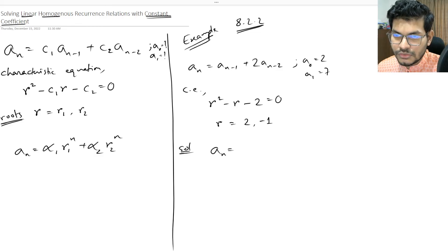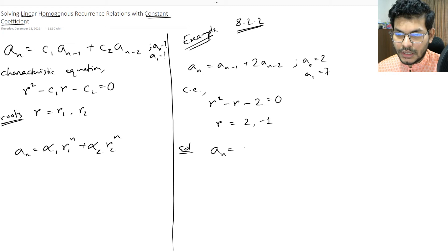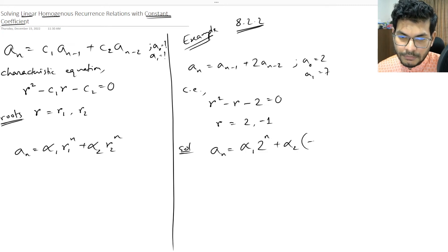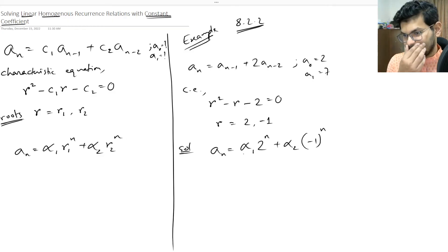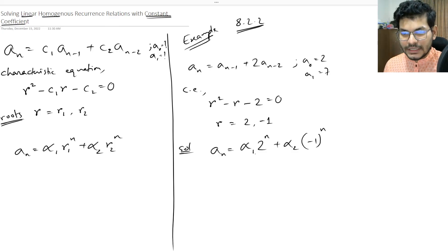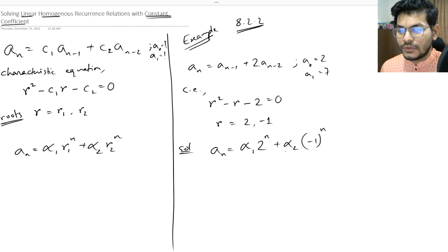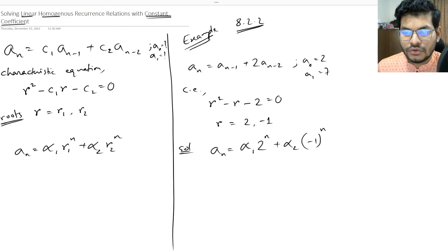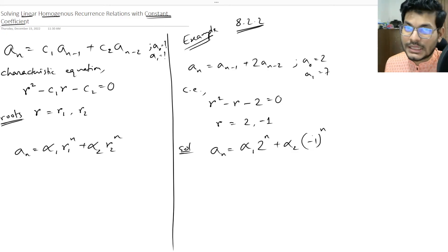Plugging in our roots r1=2 and r2=-1, the solution becomes: a(n) = α₁·2ⁿ + α₂·(-1)ⁿ. We still need to find the values of α₁ and α₂ using the base cases. Once we find those constants, we have a perfect closed-form solution with no recursion.